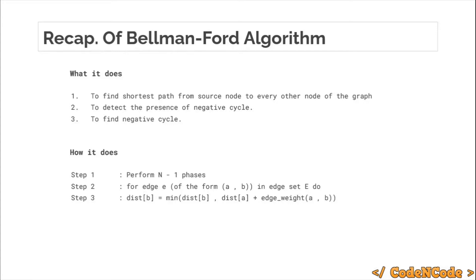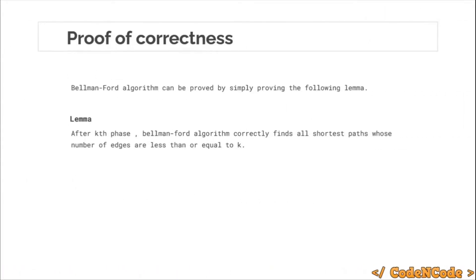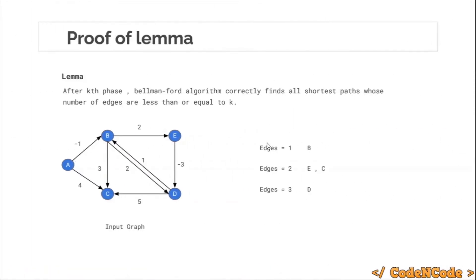So the question for this algorithm is: what is the proof of correctness of Bellman-Ford algorithm? That is what we are going to study in this lecture. Bellman-Ford algorithm can be proved simply by proving this lemma. The lemma says that after k phases, Bellman-Ford correctly finds the shortest path to all of those nodes which are having a shortest path of length less than or equal to k edges. Before proving this lemma, you should understand what it actually says, so let me explain it in detail.